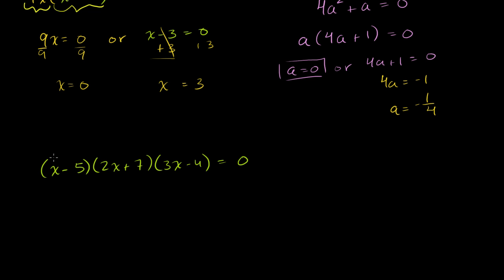As we said, if we have three numbers, if we have a times b times c equal to 0, that means that at least one of these are 0, maybe more than one. Either a, or b, or c, or some combination of them are equal to 0. So once again, I have three numbers. This could be viewed as an a, this could be viewed as a b, this could be viewed as a c. I'm multiplying them, and they're equal to 0. So that means that either x minus 5 is equal to 0, or 2x plus 7 is equal to 0, or 3x minus 4 is equal to 0. And we can solve each of these independently.